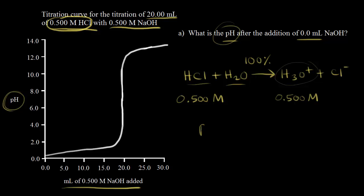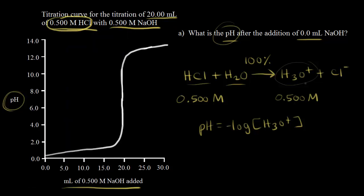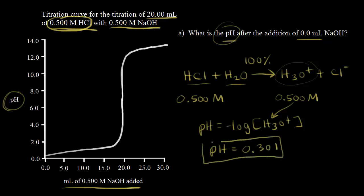Now it's easy to find the pH because pH equals the negative log of the concentration of hydronium ions. We take the negative log of 0.500, which gives us 0.301. So the pH equals 0.301. We can find that point on our titration curve — right at the beginning, where we've added 0.0 mLs of base. Our pH looks just above zero on the titration curve, and we calculated it to be 0.301.